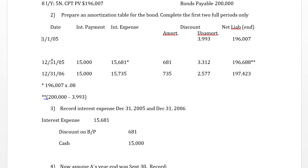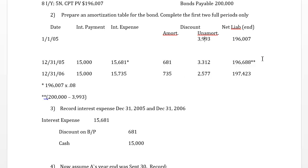Over the one-year period ending 2005, we made a payment of $15,000 on December 31st. Using IFRS and the effective interest method, interest expense equals the net liability multiplied by the yield of 8%, giving us $15,681. The difference between what you expense and what you pay is the discount amortized: $681 for 2005. Starting with $3,993 unamortized discount and amortizing $681 leaves $3,312 unamortized.